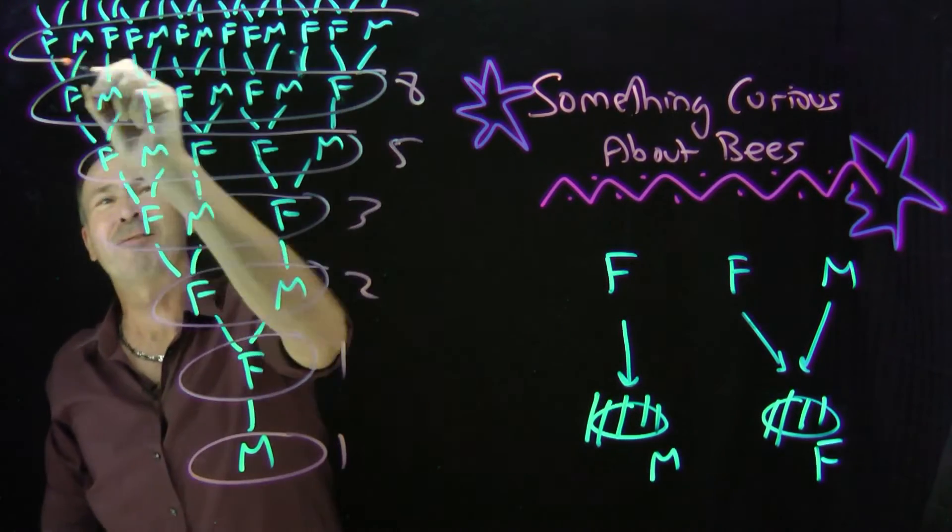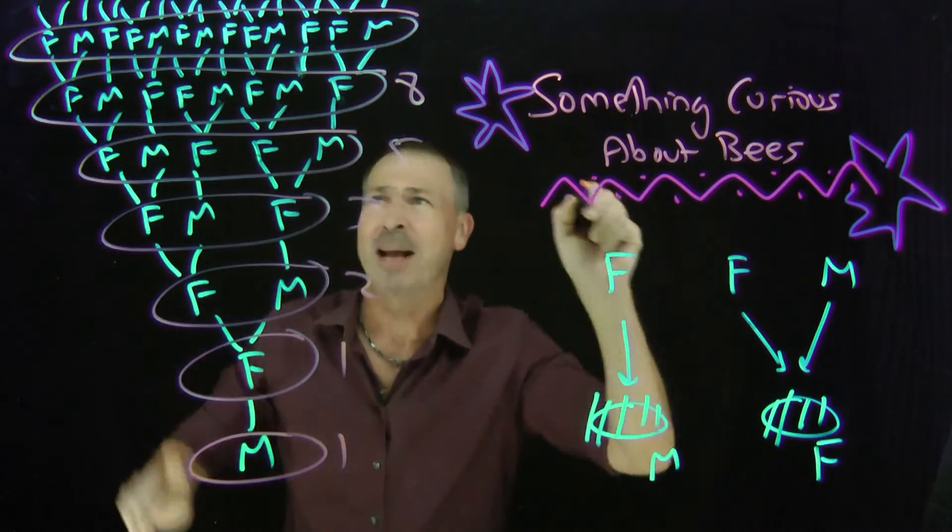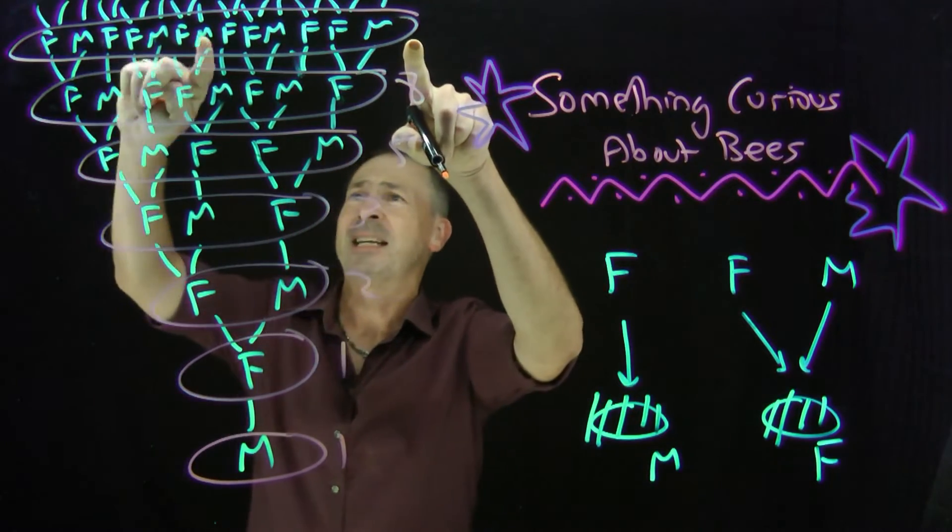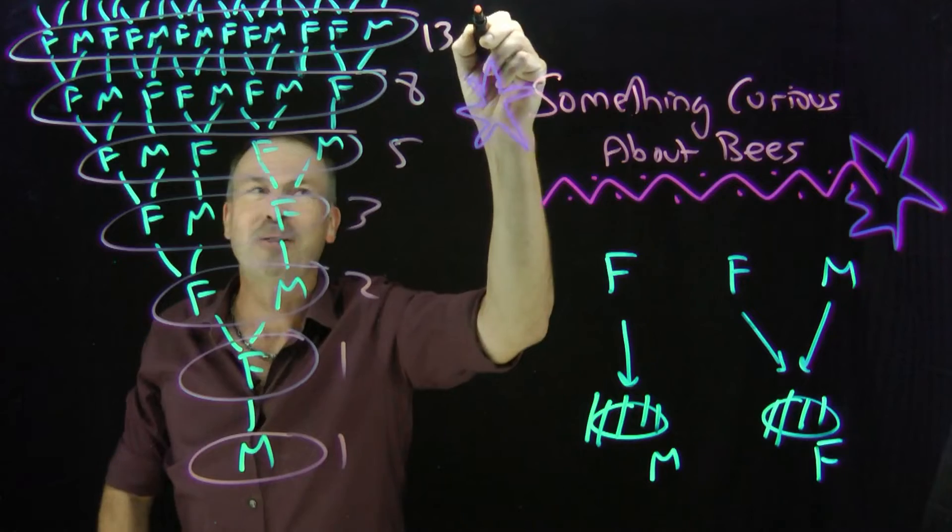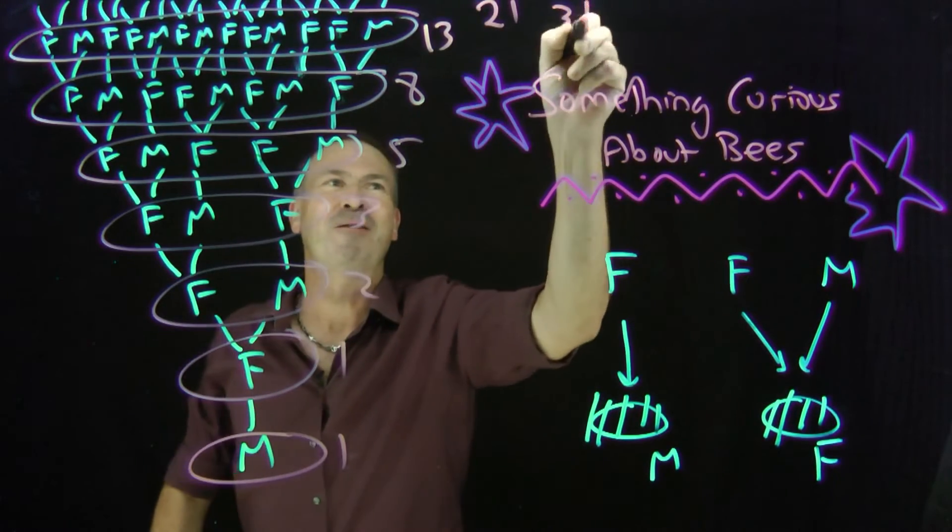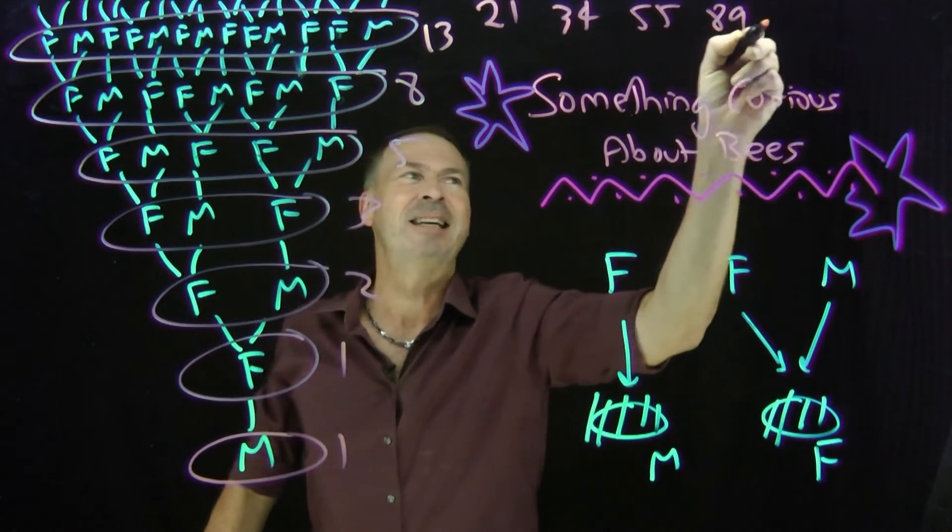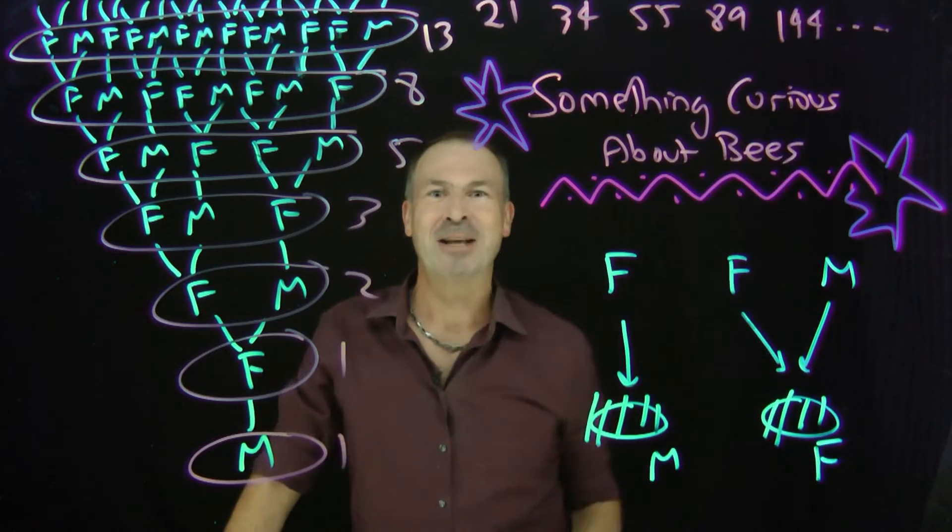Count these great great great great great grandparents, think I've run out of greats. There's going to be thirteen. And the next generation back is a count of 21, 34, 55, 89, 144 and so on.